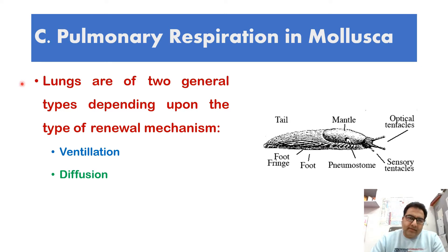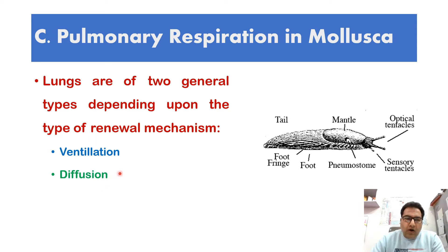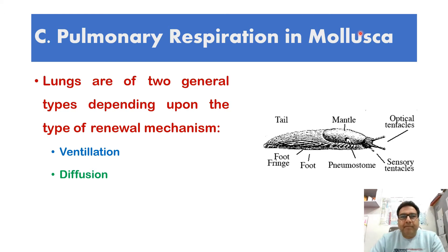Pulmonary respiration in Mollusca, in the form of lungs, is of two general types depending on the removal mechanism — whether there is simple ventilation or diffusion. Air-breathing gastropods possess various modifications which minimize evaporation from the respiratory surface and also establish a pumping mechanism for the removal of air. In many cases, this opening is called the pneumostome.